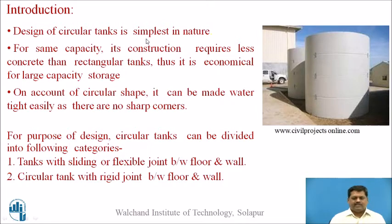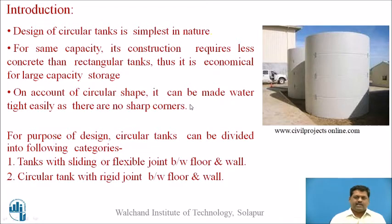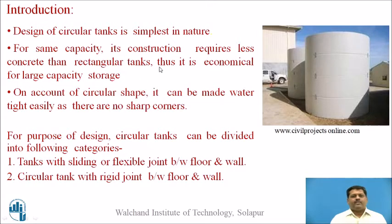The design of a circular tank is simple in nature because there is only one most important element. There is no joint within the wall itself — there is a joint between the wall and base slab, but within the circumferential wall there is no joint. For the same capacity, its construction requires less concrete than the rectangular tank.